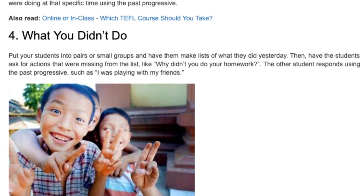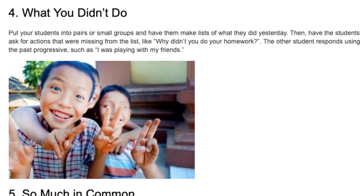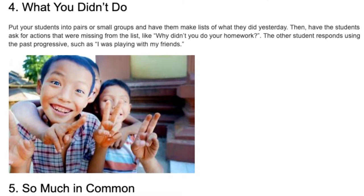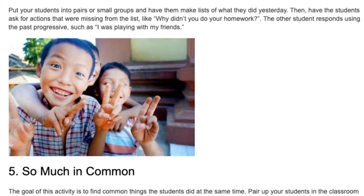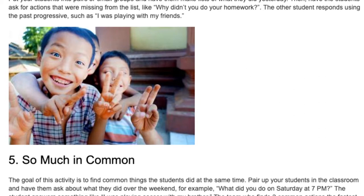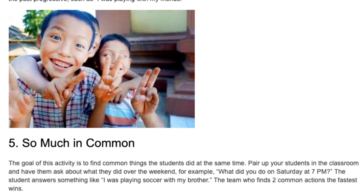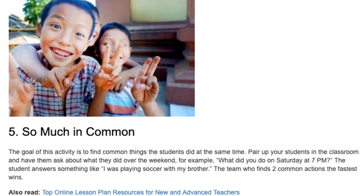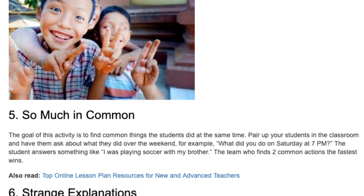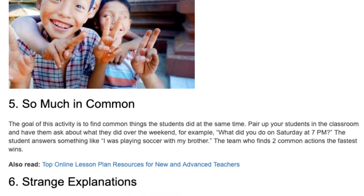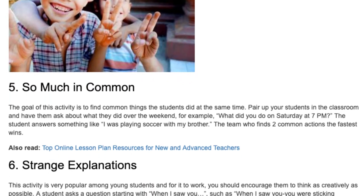Activity 5: So Much in Common. The goal of this activity is to find common things the students did at the same time. Pair up your students in the classroom and have them ask about what they did over the weekend, for example 'what did you do on Saturday at 7pm?' The student answers something like 'I was playing soccer with my brother.' The student who finds two common actions the fastest wins.